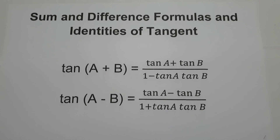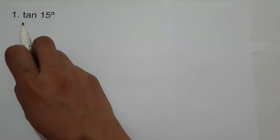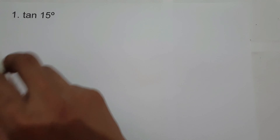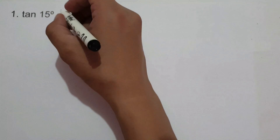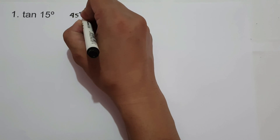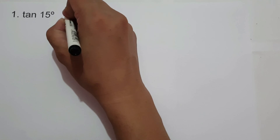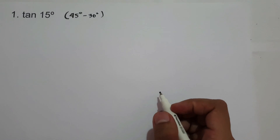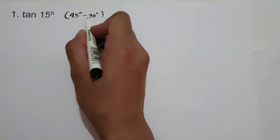Let's start with the first example: tangent 15 degrees. How can we find the exact value of tangent 15 degrees? First, we need to identify two angles in the unit circle that can be added or subtracted to get 15 degrees. That is 45 degrees and 30 degrees — if you subtract 45 and 30, we get 15.